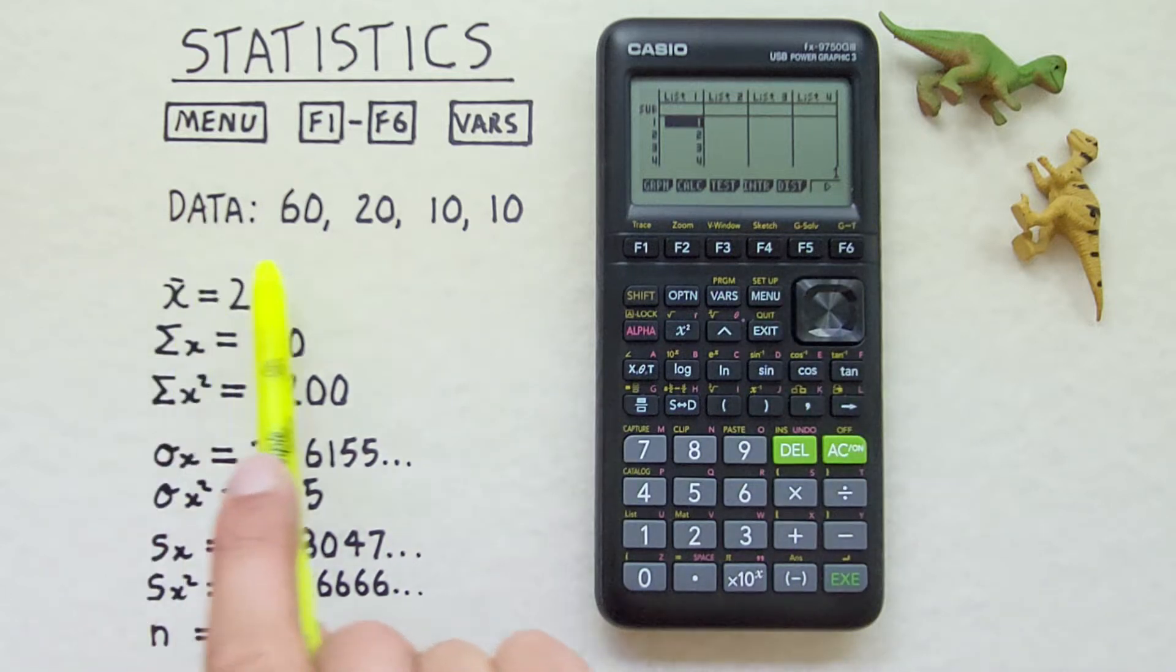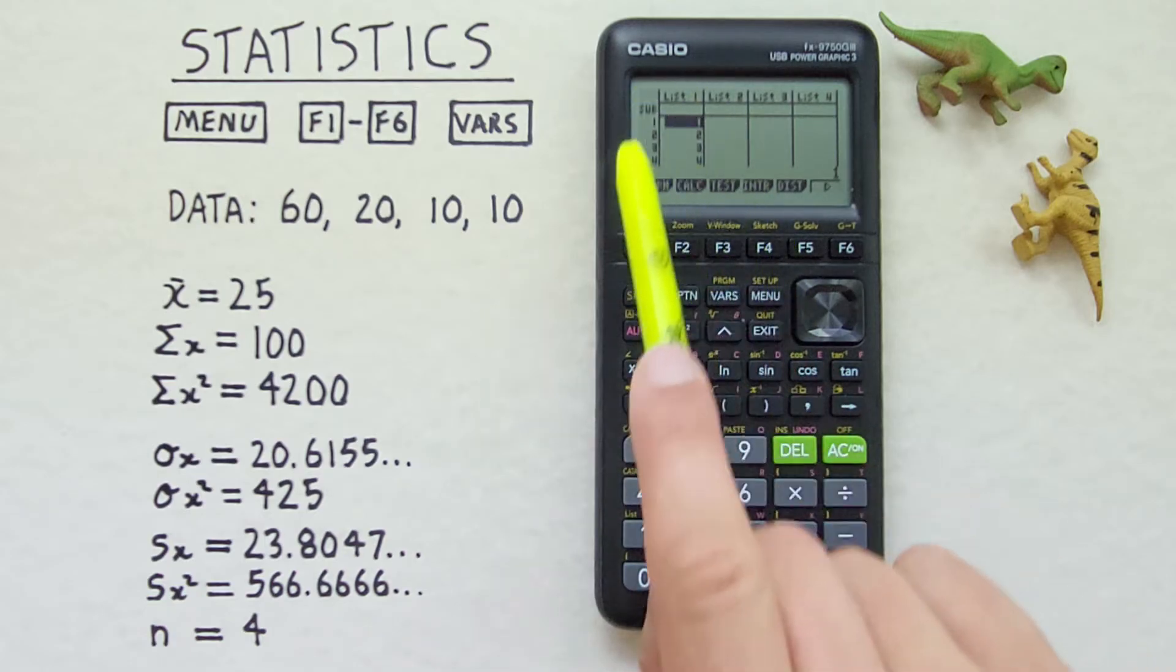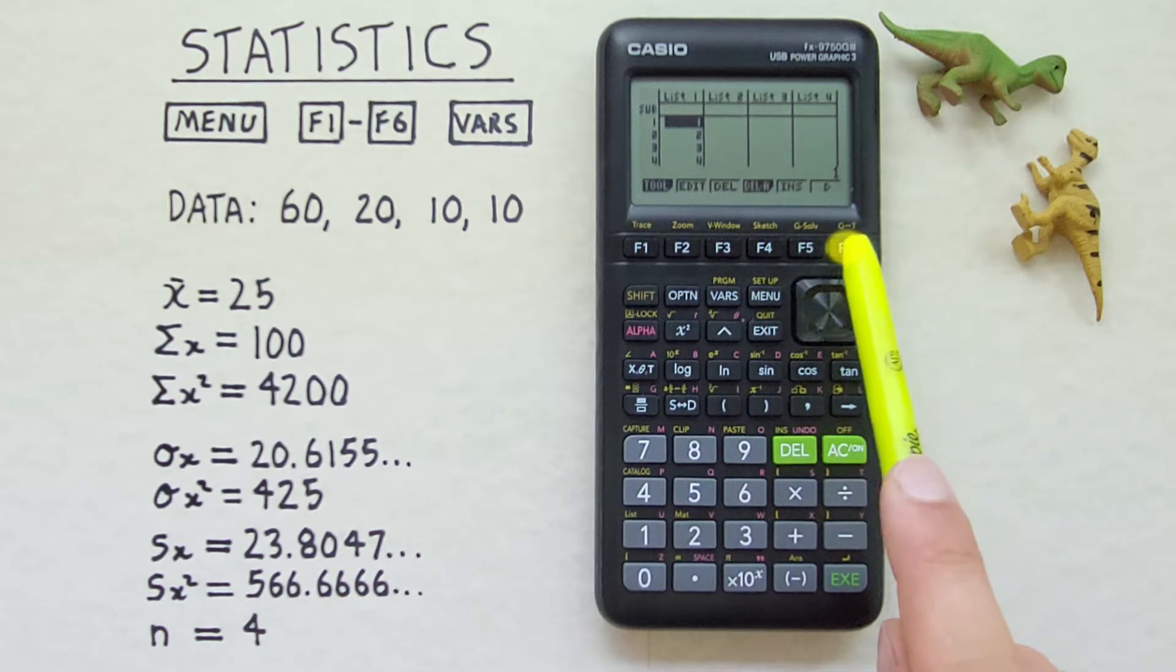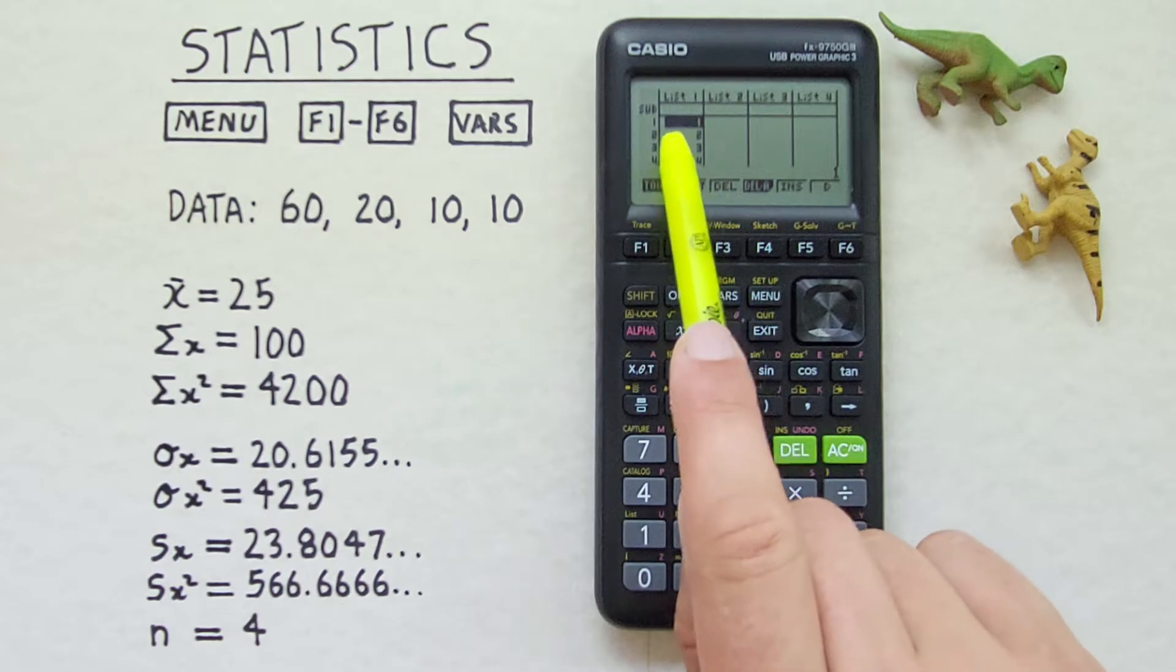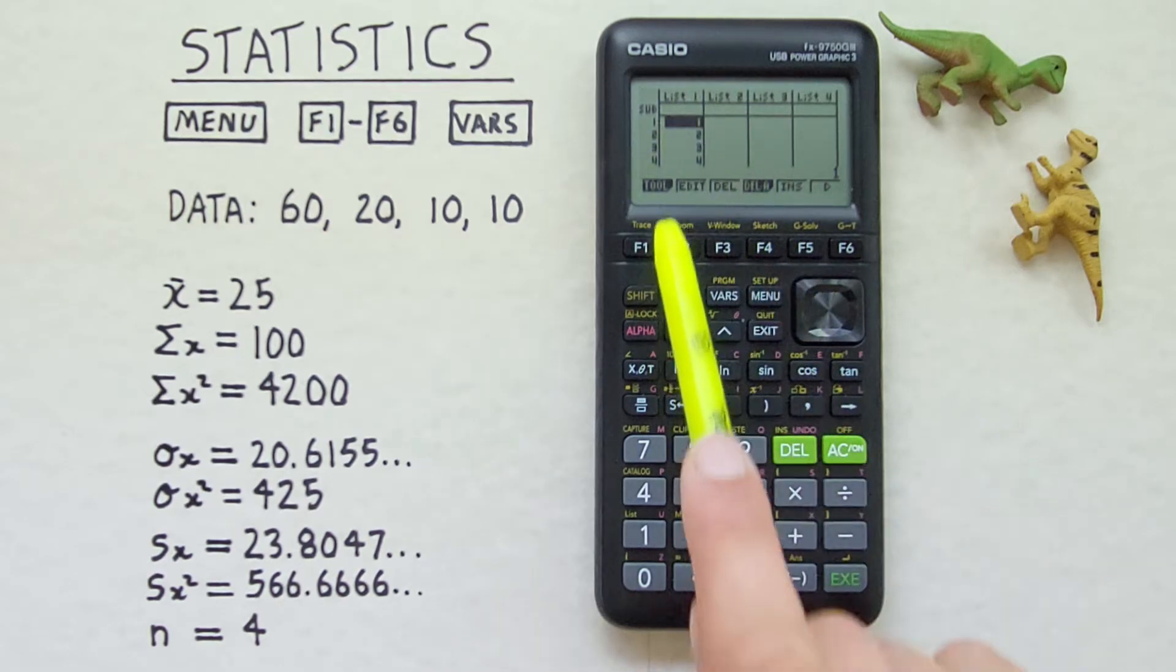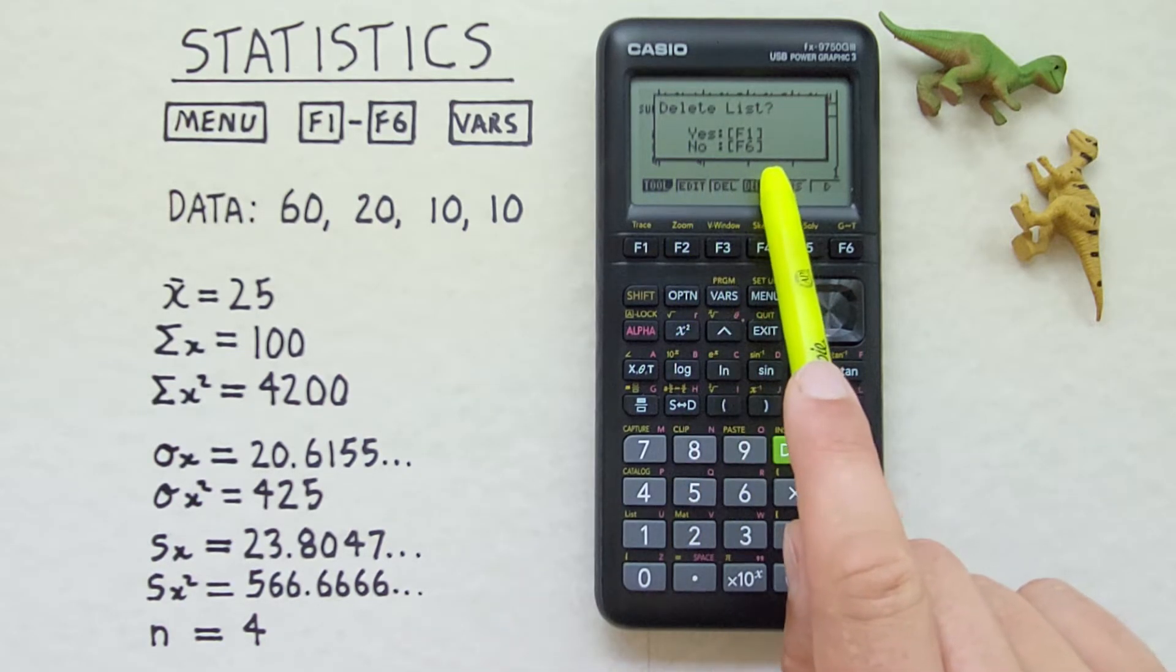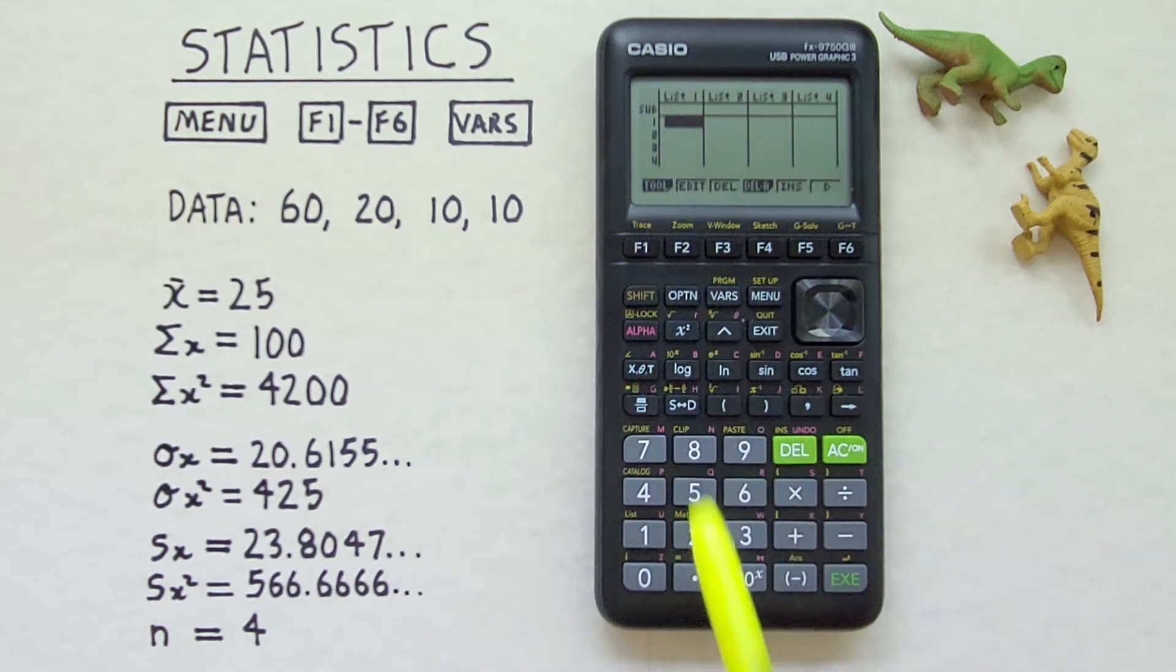This will be our data set that we're working with right here. If you go to this mode and you find there's already some numbers or data entered you can delete that by pressing the F6 until you see the DEL for delete. This will delete one of the numbers or DEL A which will delete all of them in one list. We'll use DEL A here. It'll ask us to confirm yes. There we go we've gotten rid of the old data and we're good to start.